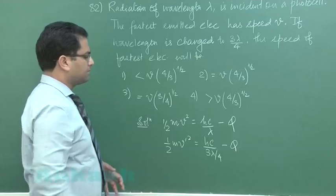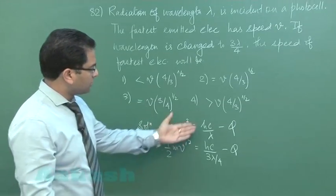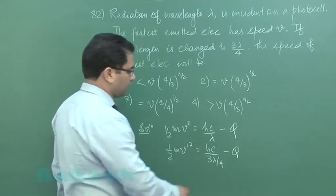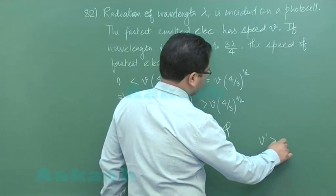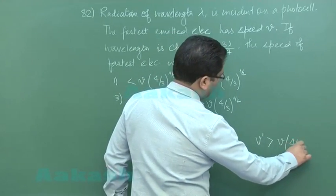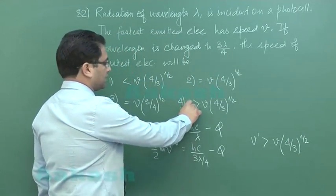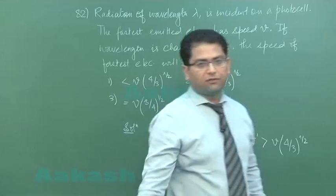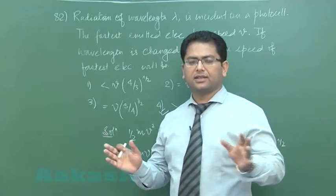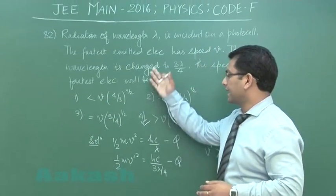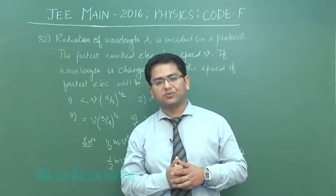Now this is a very simple question to solve. These two simultaneous equations you can solve and you would easily get the result v dash as v times root of 4 by 3. So that will give us the correct option as option number 4. That finishes question number 82 as well.